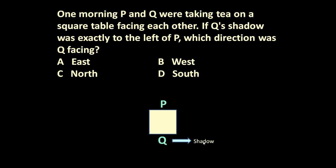It means shadow of Q will be like this. It is a morning. It means position of the sun will be here. Position of sun is here. Shadow is here.